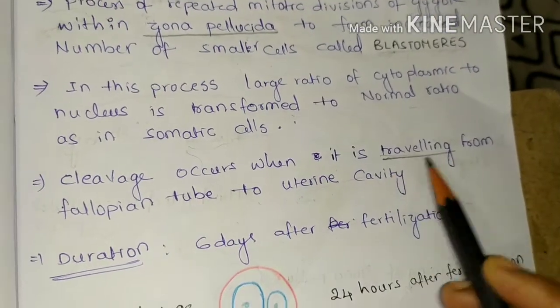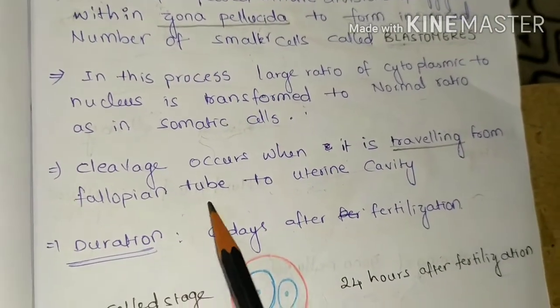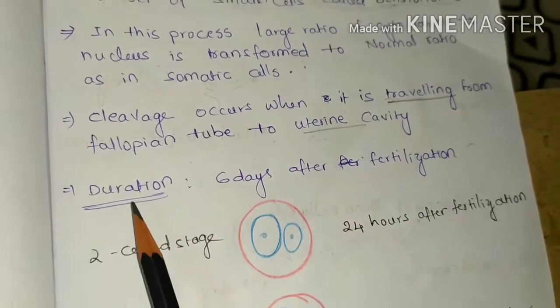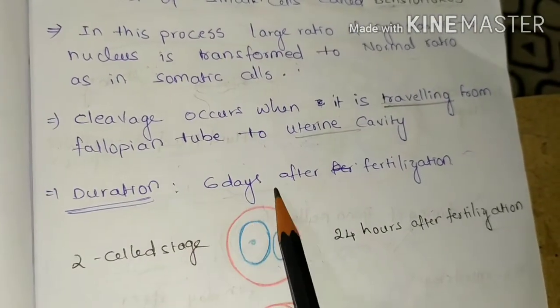The process of traveling is aided by the ciliary beats of uterine tube epithelium and muscular contractions of uterine cavity. The total duration of cleavage is 6 days after fertilization.